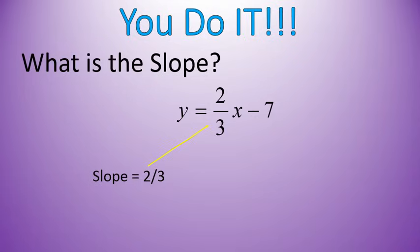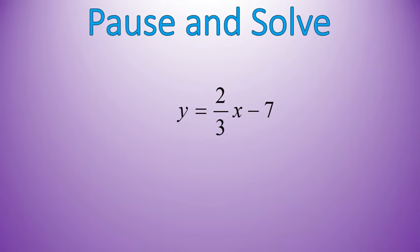Whatever the number in front of x, it doesn't matter if it's a fraction, a decimal, a positive number. They usually won't write it as a decimal, but it could be a positive, negative, it doesn't matter. That's the slope, the number in front of x.